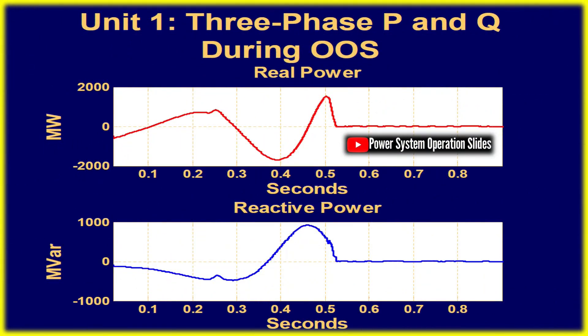Some out-of-step tripping relays provide only tripping functionality, while others also integrate power swing blocking to prevent unwanted activations.